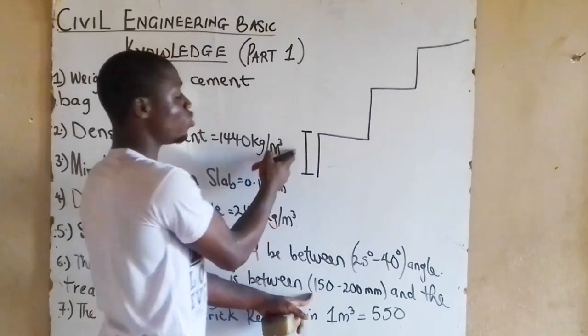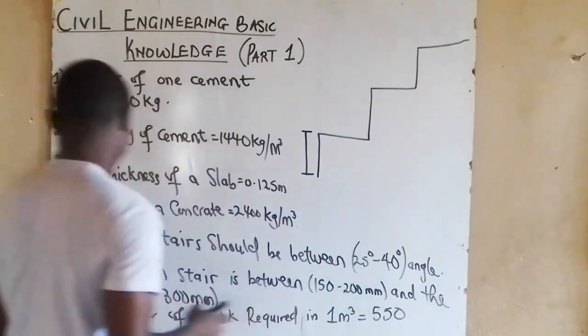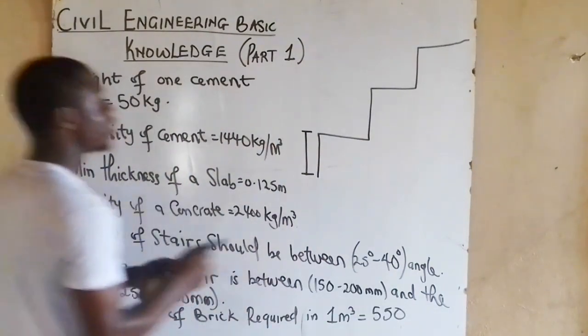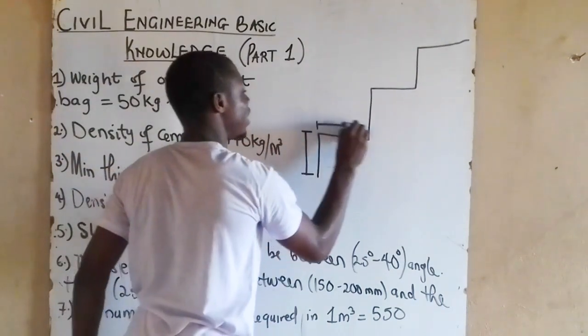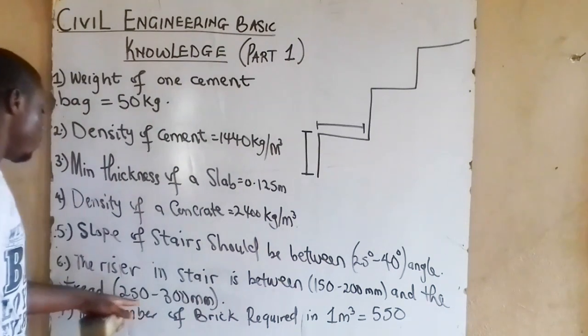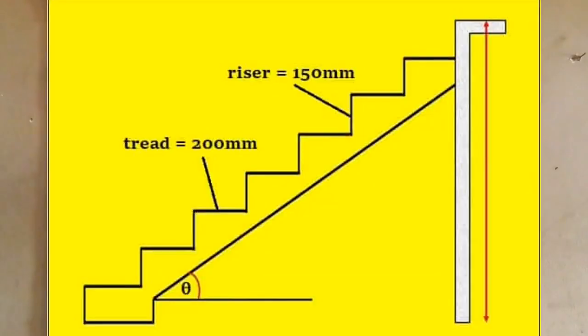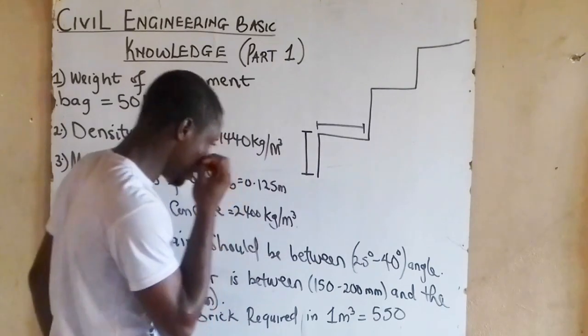So, 150 to 200 millimeter. And the tread. What is the tread? The tread is this line here, horizontal line here. This is a tread. Should be in between 250 to 300 millimeter. So, take note. The riser is a vertical line. While the tread is horizontal line for the staircase.